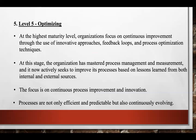Coming to level 5 — the Optimizing level — organizations focus on continuous improvement by using innovative approaches, feedback loops, and process optimization techniques. The complete focus is on continuous process improvement and innovation. New software processes are continuously improved based on lessons learned from both internal and external sources. From receiving online orders, preserving flowers to the delivery process, all systems have been optimized.